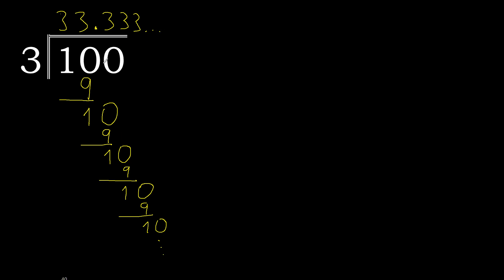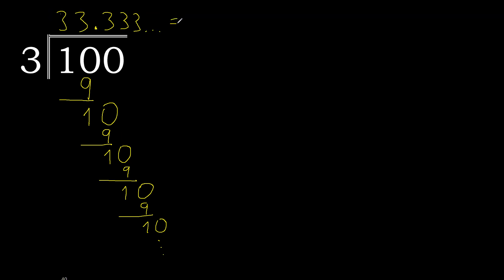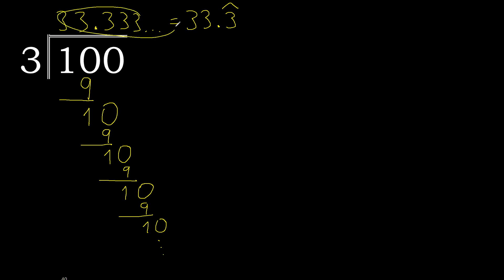100 divided by 3 is 33.333... or written like this: after the decimal point, 3 repeats. Therefore 3 repeats — 100 divided by 3 is 33.3 recurring.